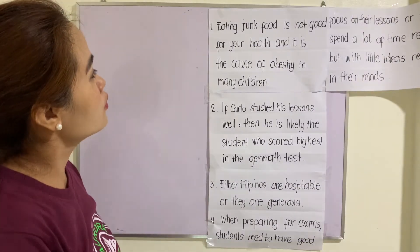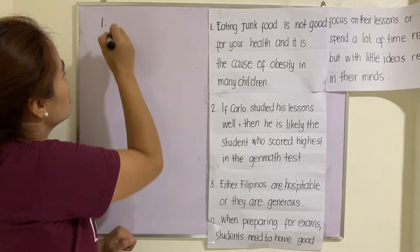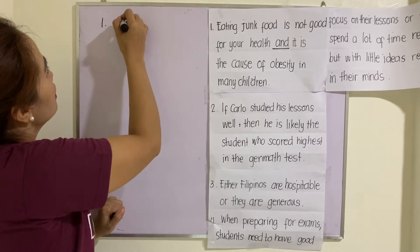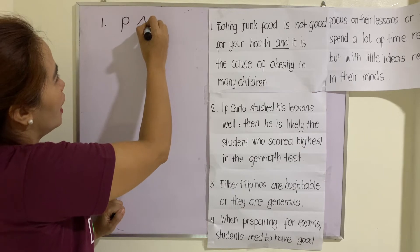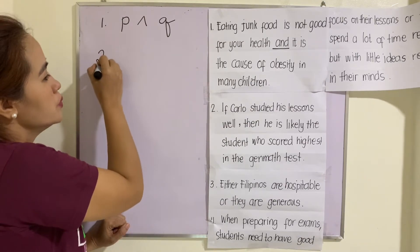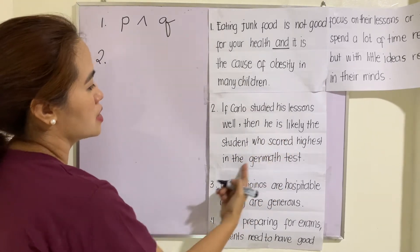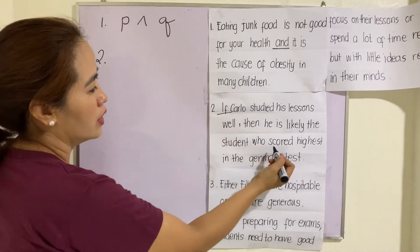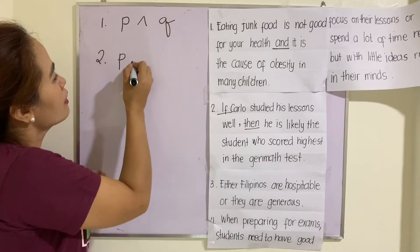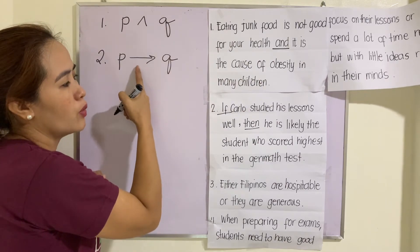Example one: 'Eating junk food is not good for your health and it is the cause of obesity in many children.' The logical operator here is 'and,' so it is written as P and Q. There is only one logical operator. Example two: 'If Carlos taught his lessons well, then he is likely the student who scored highest in the Gen Math test.' The logical operator is 'if...then,' so it is written as P implies Q.